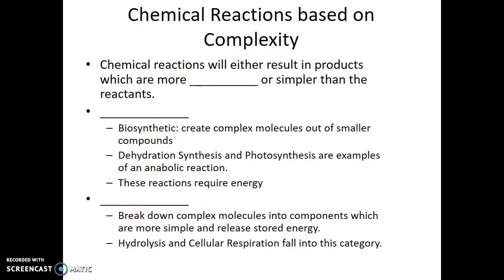There are different ways we can categorize chemical reactions based on the complexity of their products. Chemical reactions will either result in products which are more complex or simpler than the reactants. If a chemical reaction results in a larger, more complex product, we call it an anabolic reaction, sometimes also referred to as biosynthetic because we're creating complex molecules out of smaller, simpler ones. Dehydration synthesis and photosynthesis are both examples of anabolic reactions.